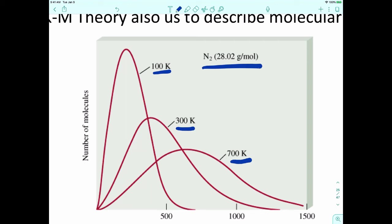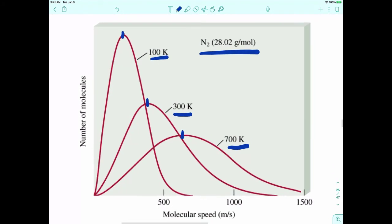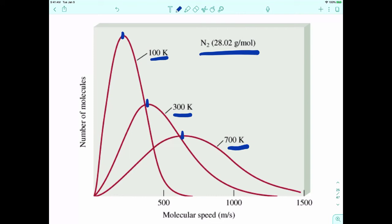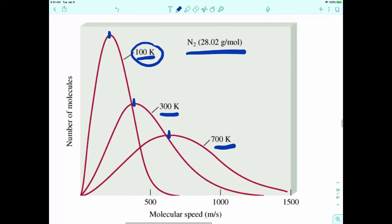The shapes of the curves are different. At 100K the curve is very pointed, and as the temperature increases the curves spread out. Looking at the maximum points on these curves, they are definitely increasing — as temperature increases, so does the average speed of the molecules. At 100K, most molecules have relatively similar speeds, but at 700K there's a wide distribution of speeds. So while the average speed increases, you also get a wider distribution.